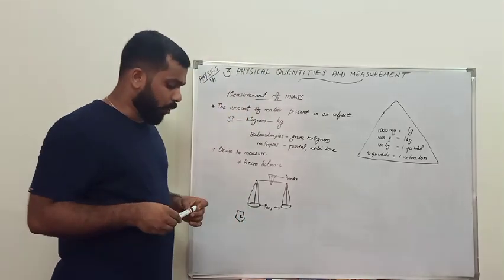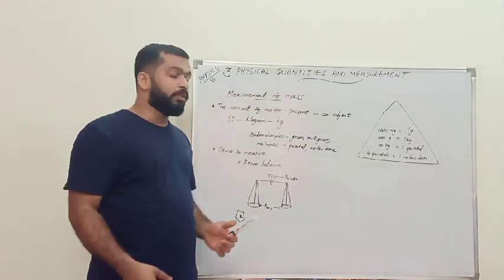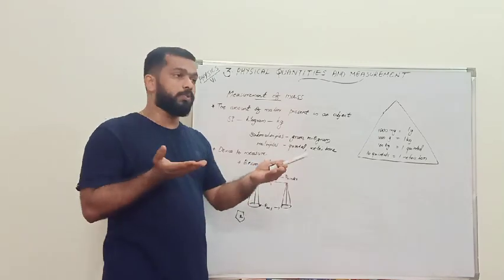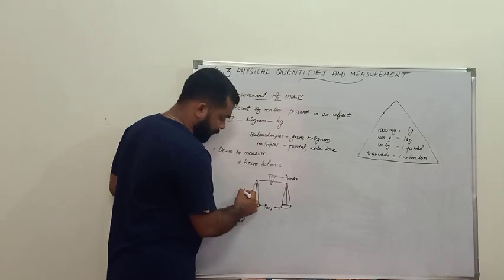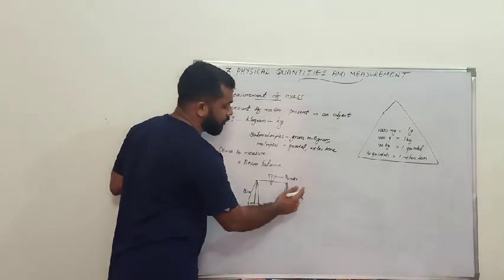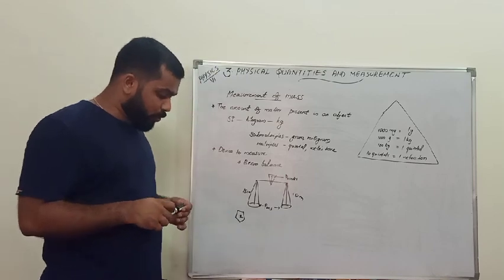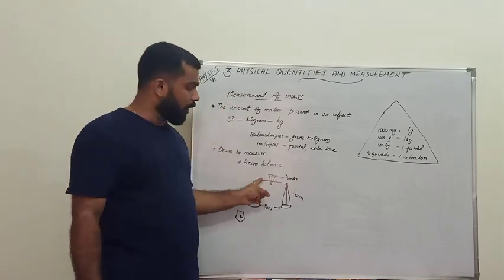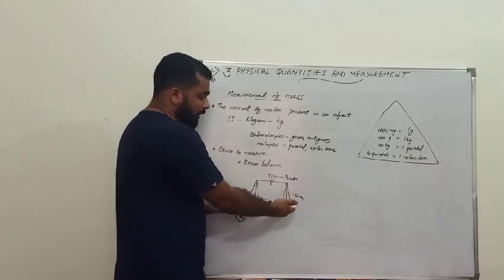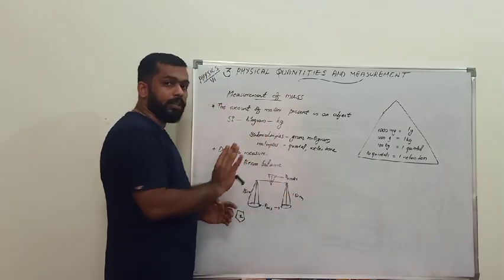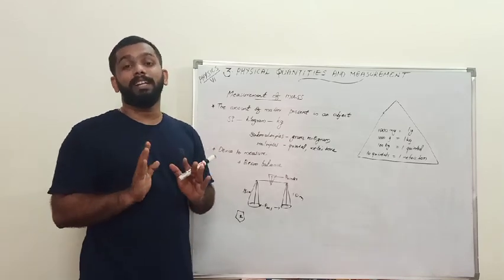An accurate beam balance has the following features: both pans must be of equal mass so they stand level without any load; both arms must be of equal length; both pans must be suspended with strings of equal length and mass; and when the pans are empty, the beam should be horizontal and the pointer vertical. If these conditions are not met, you will not get a correct reading.